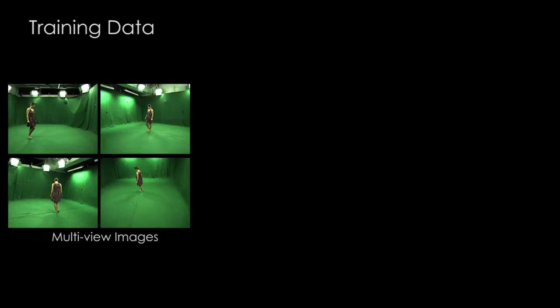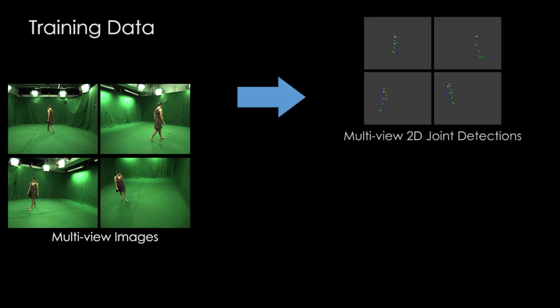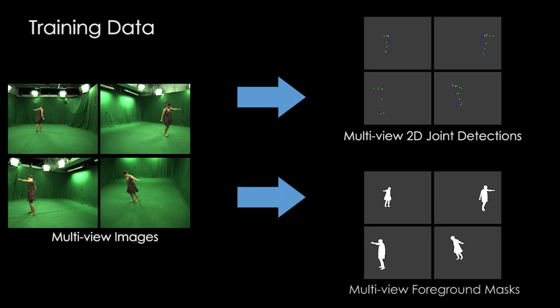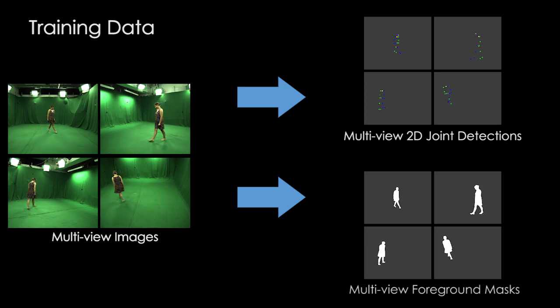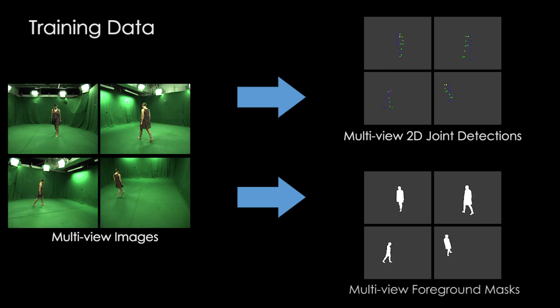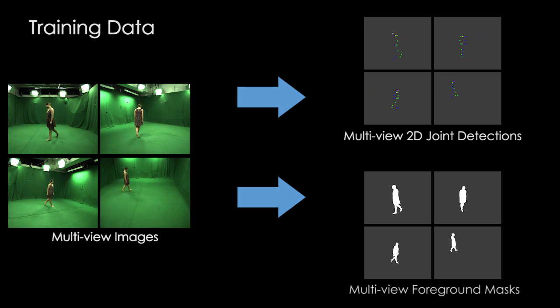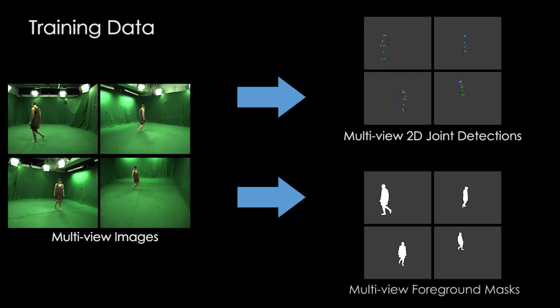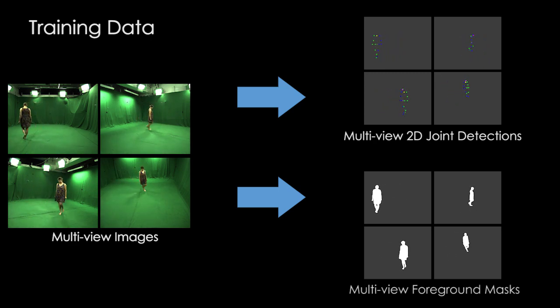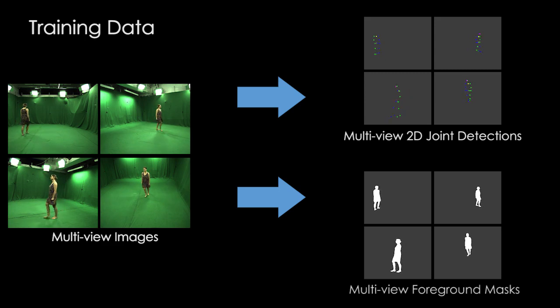To acquire the training data, we record a multi-view video sequence of the actor performing various motions in a multi-camera studio with green screen, from which we extract 2D pose detections and foreground masks.